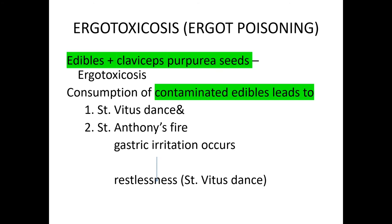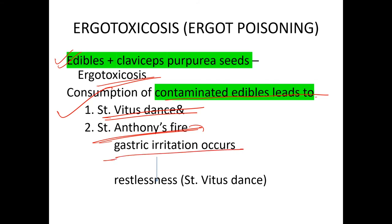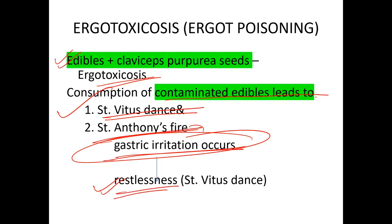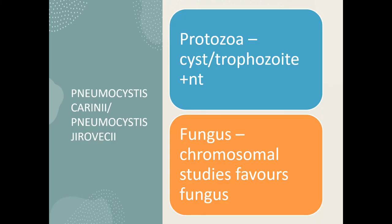Ergotoxicosis is ergot poisoning caused by consumption of edibles contaminated with Claviceps purpurea seeds. This leads to St. Vitus' dance (restlessness) and St. Anthony's fire — gastric irritation causing a burning sensation in the belly and restlessness, hence the name St. Vitus' dance.